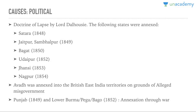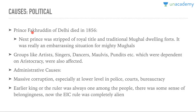The third important political cause: Prince Fakruddin of Delhi died in 1856, and the next prince was stripped of his royal title by Lord Canning. The traditional Mughals who lived in these massive forts and residences were thrown out — a really embarrassing situation for the mighty Mughal Empire that had stood for 200-300 years. Groups of people like artists, singers, maulvis, and pandits who were completely dependent on the patronage of these classes were also affected.